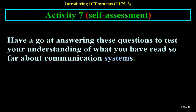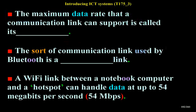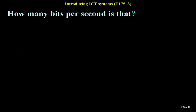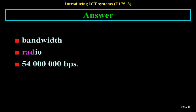Activity 7 Self-Assessment: Have a go at answering these questions to test your understanding of communication systems. The maximum data rate that a communication link can support is called its bandwidth. The sort of communication link used by Bluetooth is a radio link. A Wi-Fi link between a notebook computer and a hotspot can handle data at up to 54 megabits per second (54 Mbps) — that is 54,000,000 bits per second.